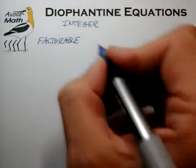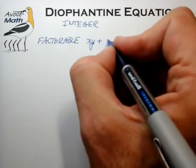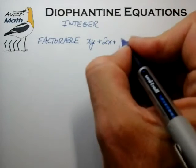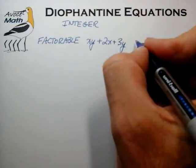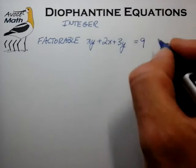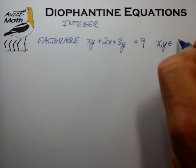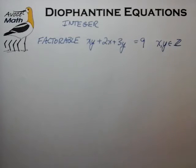The first prototype example is an equation of the type, for example, xy + 2x + 3y = 9, where we're trying to solve for x and y in the integers, which we denote by Z.